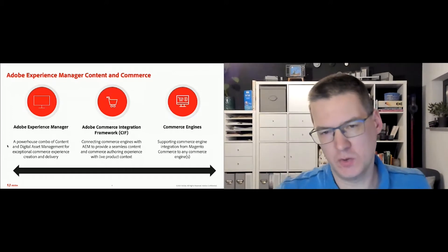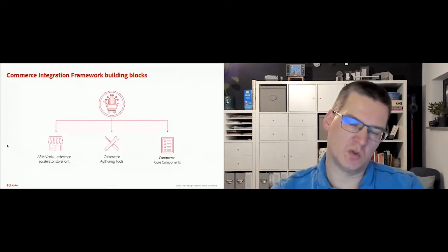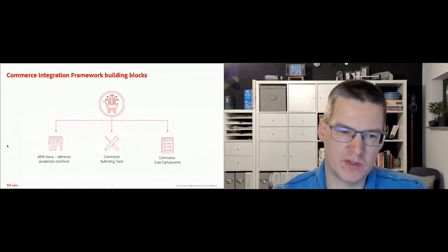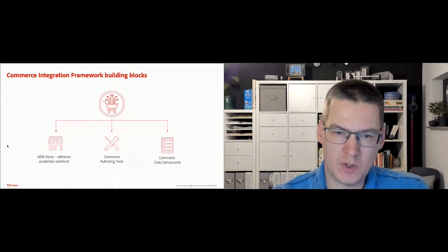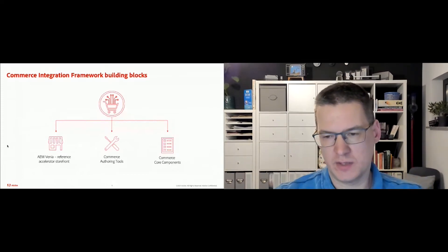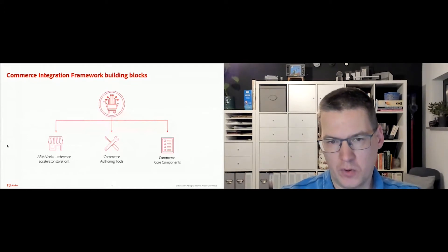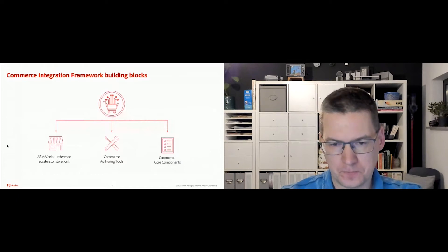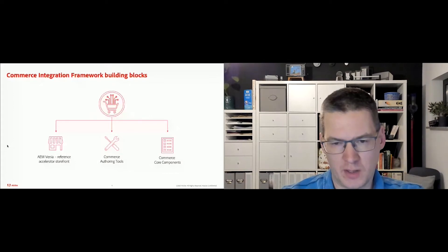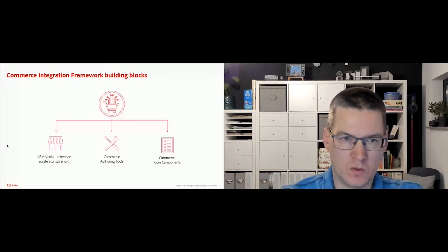If you open the toolset, we provide you with three modules or three building blocks. First is what we call the Adobe AEM Venia, which is our reference store. It's a B2C online store example which you can take for a project as a reference and start from there. This project is built using the commerce core components, which is a set of core components. If you are familiar with the sites core components, this is basically nothing new, except they are built for the commerce use cases.